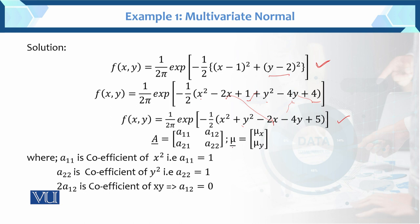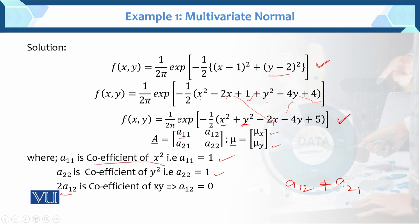Now, A equals this matrix and we identify the mean vector. This is the mean vector with components mu_x and mu_y. Here a11 is the coefficient of x squared, which equals 1. a22, the coefficient of y squared, also equals 1. For 2a12, which is the coefficient of xy — since there is no xy term in the density — a12 equals 0.